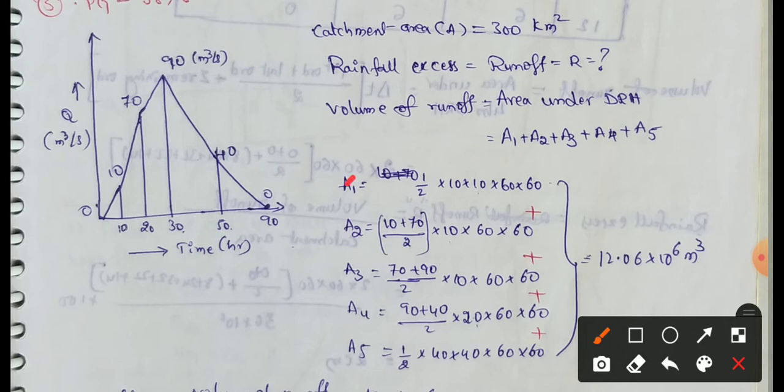First area is A1. This is a non-linear shape. The formula is: volume of runoff equals time base into first ordinate plus last ordinate by 2 plus sum of remaining ordinates. First is time base, which is 10. First ordinate is 0, second ordinate is 10. So 0 plus 10 by 2 into 60 into 60 to convert hours to seconds. This gives us the first area.